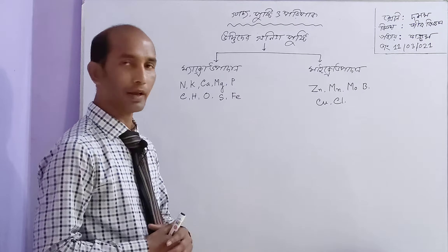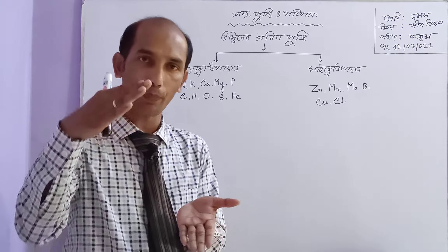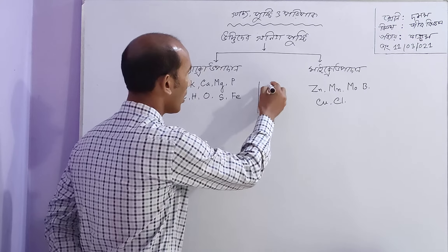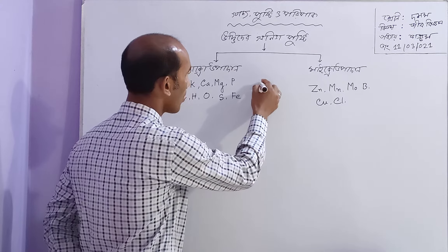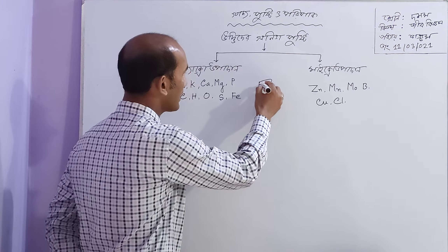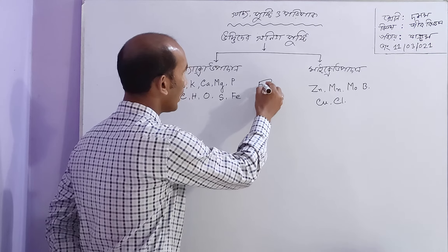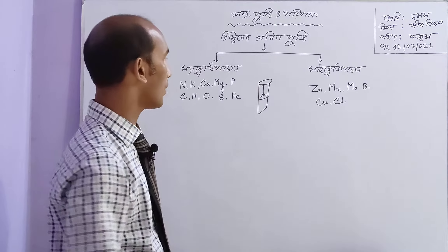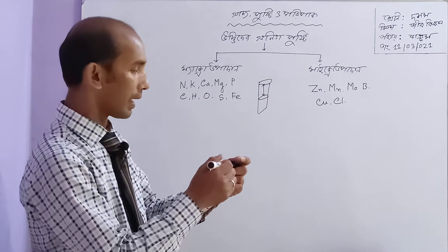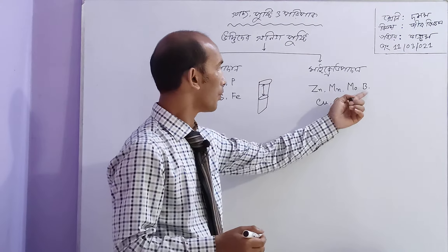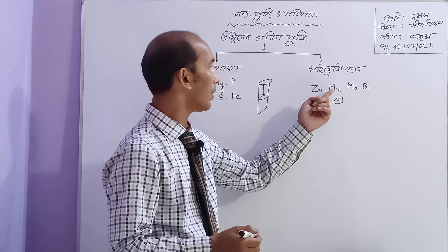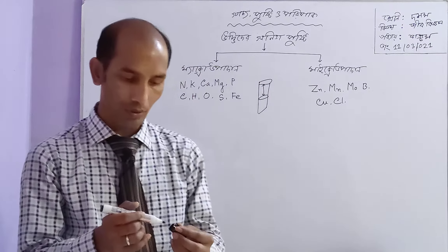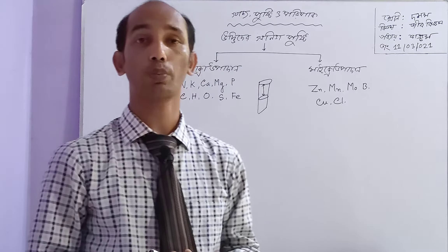Iron — you will see. When you have a mask on, you will be able to remove the skin. This skin is very good. In this case: copper, chlorine, boron, molybdenum, manganese, zinc. This skin is very good.